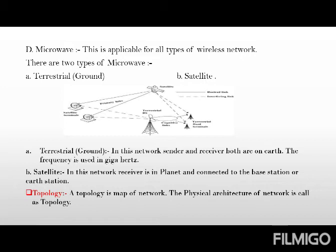Next is topology. A topology is a map of a network — the physical architecture of a network is called topology. We have already finished learning about wire types and how to implement wiring. Now, when we want to implement a network, the physical architecture of that network is called topology.